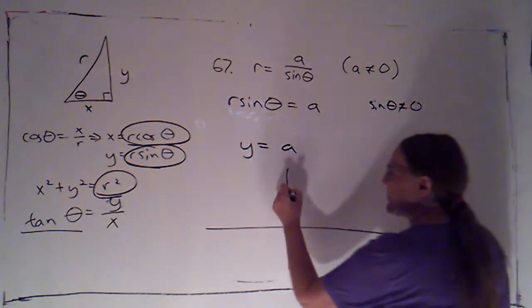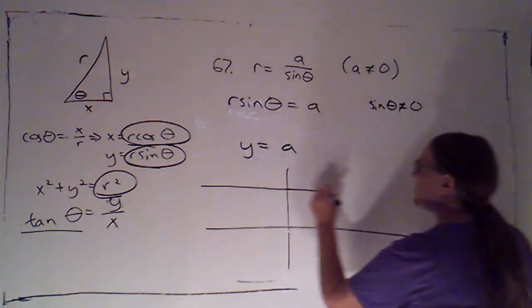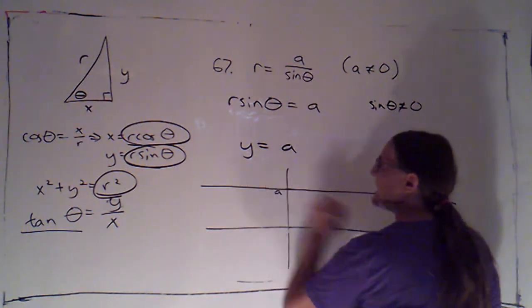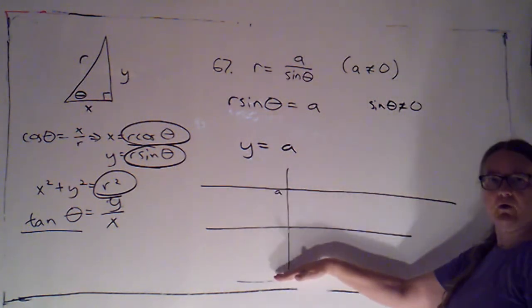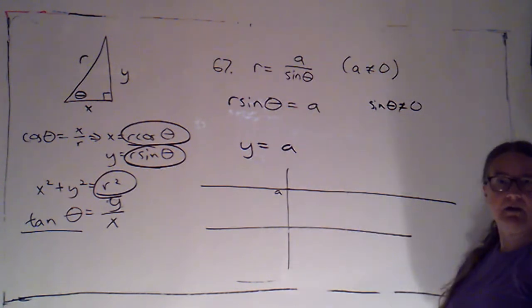I'm going to just suppose a is positive. That would give me a horizontal line up here at height a. If a was negative, I'd have a horizontal line down here at height a, which would be negative.